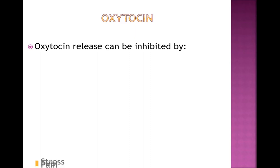Oxytocin can be inhibited by stress, fear, and pain. While positive emotions and sensations increase oxytocin release, negative emotions and physical stressors inhibit it. If the mom is in a lot of pain while breastfeeding, she'll have difficulty having a letdown. Similarly, a mom pumping at work who is worried about getting in trouble may not experience many letdowns during that session and will get less milk.